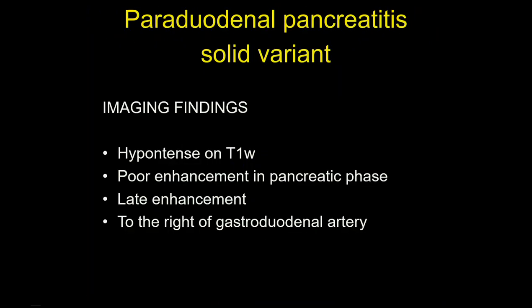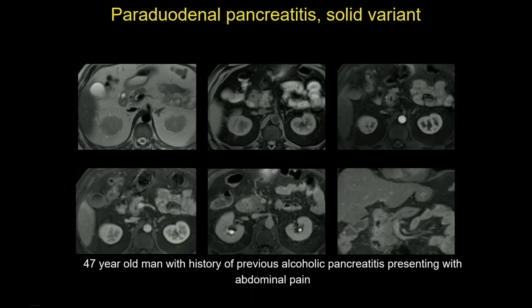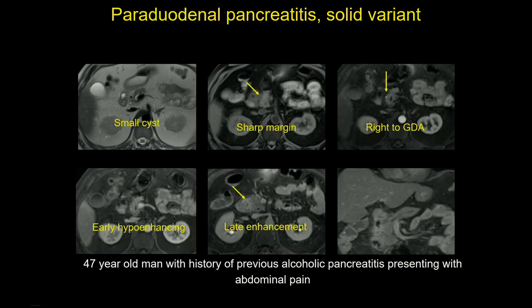Regarding imaging findings: this lesion has fibrous tissue, is hypointense on T1, with poor enhancement in the pancreatic phase and late enhancement. Typically it is located to the right of the gastroduodenal artery. When we see this lesion — a mass between the duodenum and the pancreas, with sharp margins, small cysts inside, and late enhancement in the venous and coronal phases — these are all imaging findings needed to make a correct diagnosis.